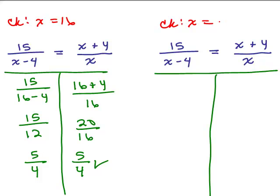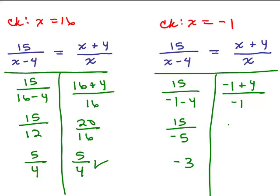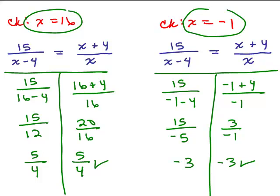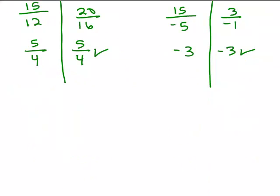Now we're going to check negative 1. That was the other solution. We're going to plug in negative 1 for x. Negative 1 minus 4—so that's 15 over negative 5, which is negative 3. On the right-hand side, we're going to plug in negative 1 for x. That gives me 3 over negative 1, and 3 divided by negative 1 is negative 3. So that checks. These solutions both checked, so those were the correct solutions. 16 and negative 1 are correct.